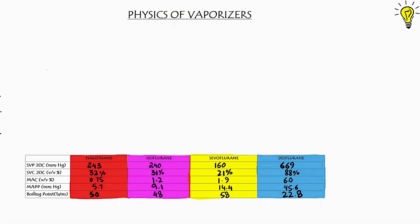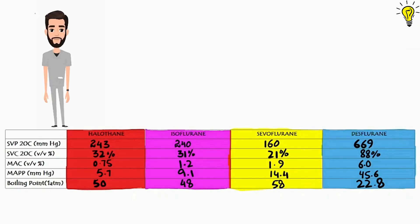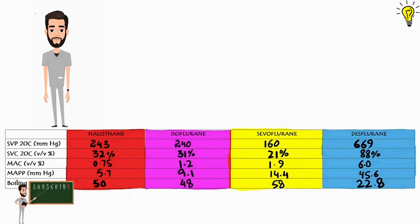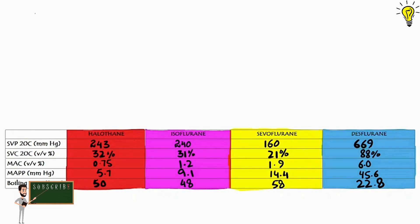The table you see on the bottom screen will stay here throughout this video. By the end of the video, you would have learned and understood these values in a better way. It has saturated vapor pressure, saturated vapor concentration, MAC values, and minimum alveolar partial pressures in vapor color-coded designs.